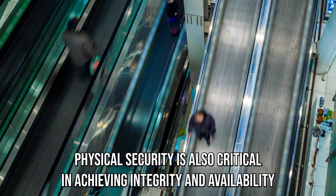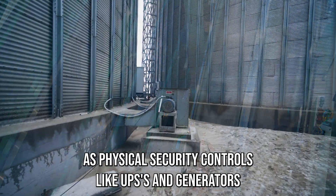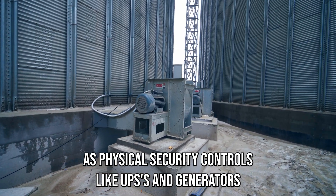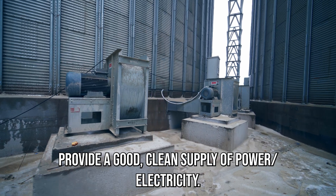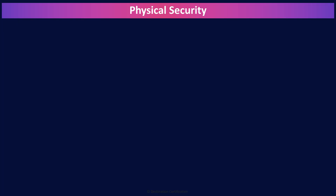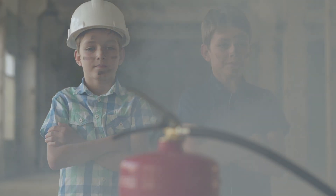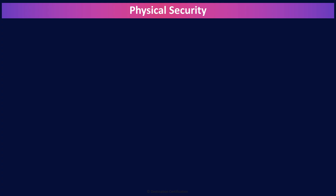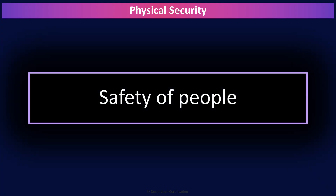Physical security is also critical in achieving integrity and availability, as physical security controls like UPSs and generators provide a good, clean supply of power and electricity. HVAC systems provide cooling, air at the right temperature and humidity. And fire detection and suppression systems help to ensure our facilities don't burn to the ground. There is one overarching primary goal of physical security, and that is the safety of people. People are the most valuable and most important assets of any organization, and physical security controls must prioritize the safety of people above all else.